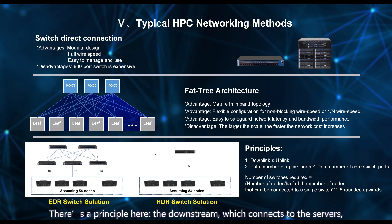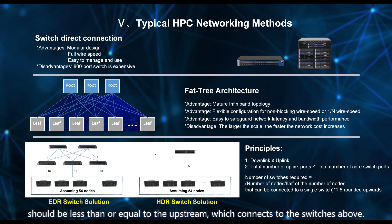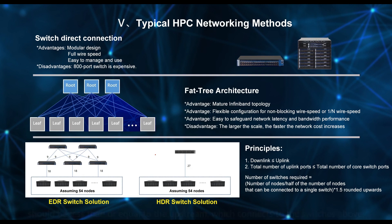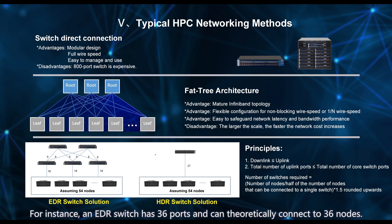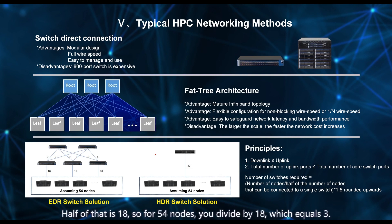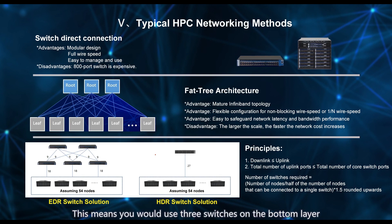There's a principle here: the downstream, which connects to the servers, should be less than or equal to the upstream, which connects to the switches above. The number of upstream ports should be less than or equal to the number of ports on the top-layer core switch. The formula for calculating the total number of switches needed is: total nodes divided by half the number of connectable nodes per switch. For instance, an EDR switch has 36 ports and can theoretically connect to 36 nodes; half of that is 18. So for 54 nodes, you divide by 18 to get 3, then multiply by 1.5 to get 4.5, which rounds up to 5 switches. This means you would use 3 switches on the bottom layer and 2 on the top layer to achieve the fat tree network structure.